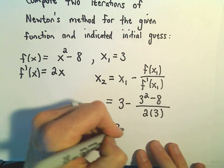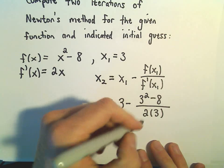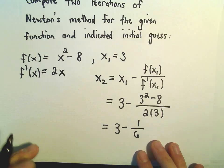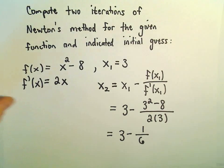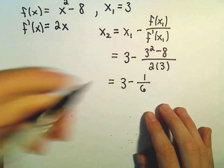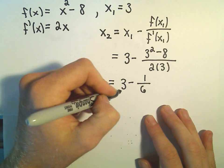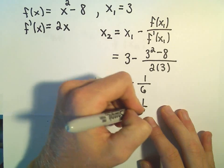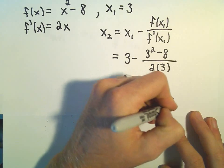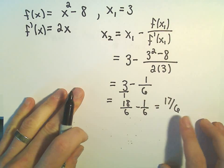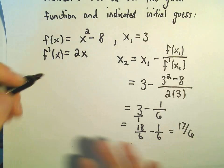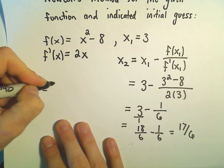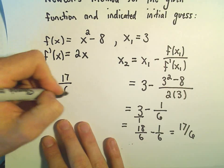And let's see, so this is going to be 3 minus, okay, so we said 9 minus 8, that's 1 over 6. I'm going to keep this as a fraction. So we could multiply top and bottom by 1, so that would give us 18 over 6 minus 1 over 6, so that would give us 17 over 6. And that would be our second guess. Okay, so our x sub 2 value is going to equal 17 over 6.